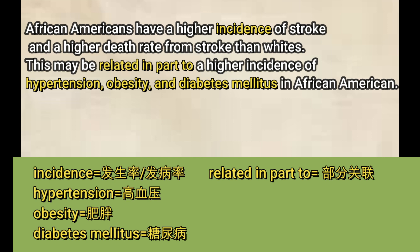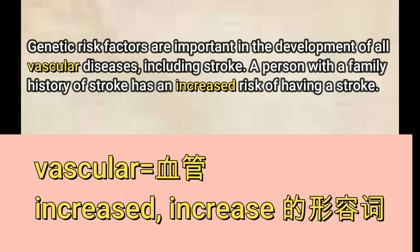这里的incidence就表示发生率、发病率的意思。非洲裔美国人中风的发病率和死亡率都高于白人。African-Americans就表示黑人，white就是白人的意思。This might be related in part to a higher incidence of hypertension, obesity and diabetes mellitus in African-American。Related in part to表示部分关联的意思。翻译：这部分原因可能与非洲裔美国人高血压、肥胖、糖尿病的较高发病率有关。